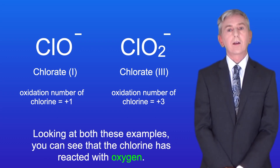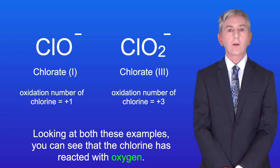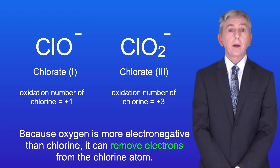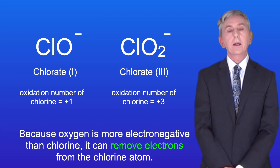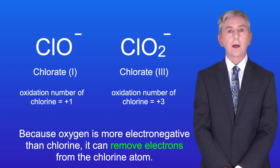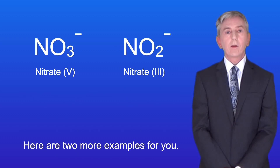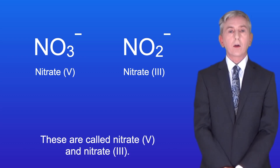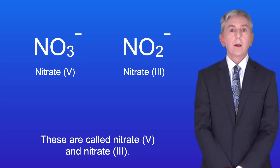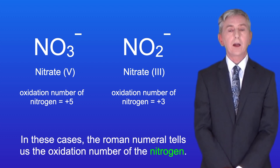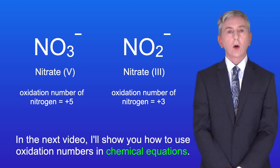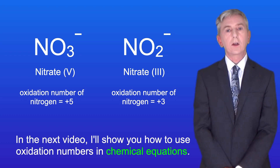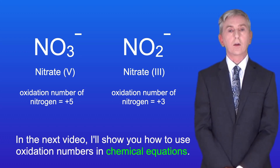Looking at both of these examples, you can see that the chlorine has reacted with oxygen. Because oxygen is more electronegative than chlorine, it can remove electrons from the chlorine atom. Here are two more examples — these are called nitrate five and nitrate three. In these cases, the Roman numeral tells us the oxidation number of the nitrogen. In the next video, I'll show you how to use oxidation numbers in chemical equations.